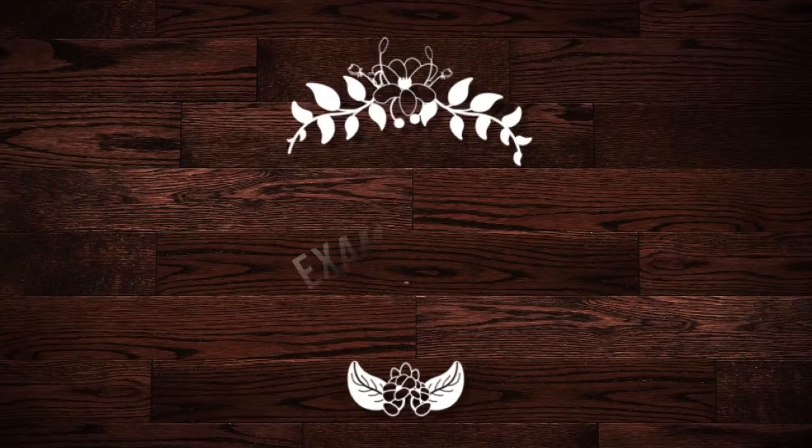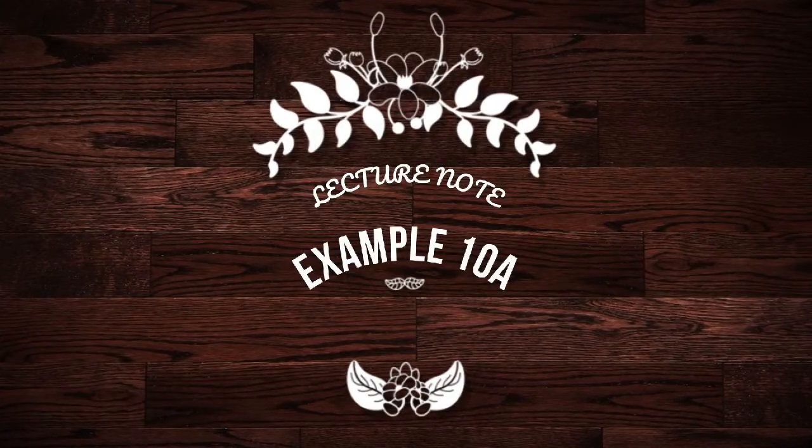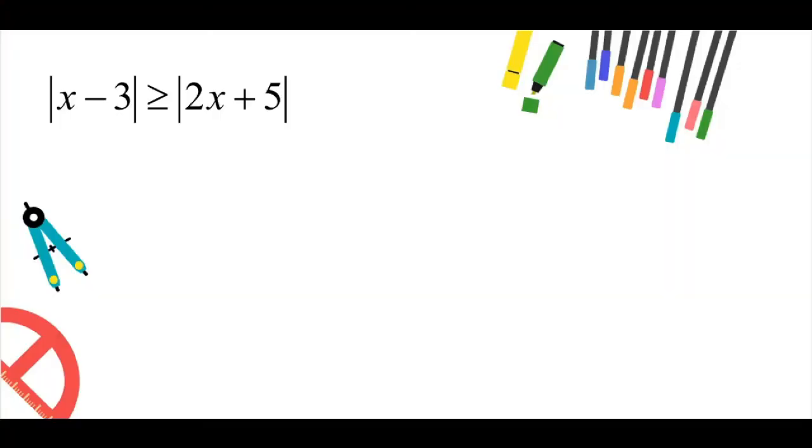Now, let's look at example 10a in your lecture note. Solve the absolute value of x minus 3 greater than or equals to absolute value of 2x plus 5.